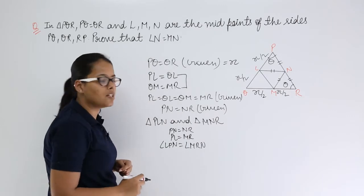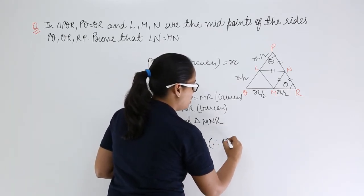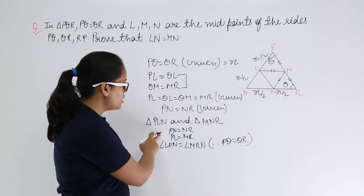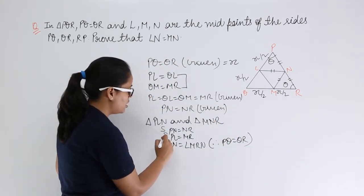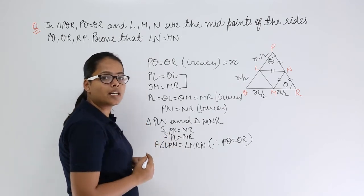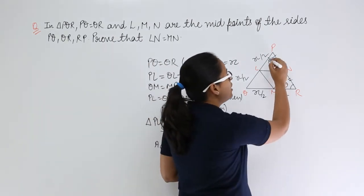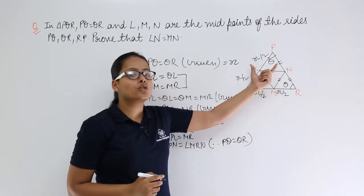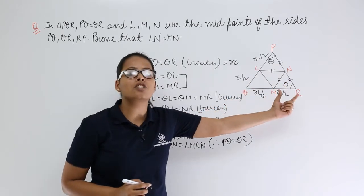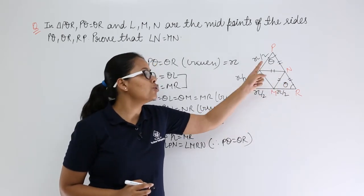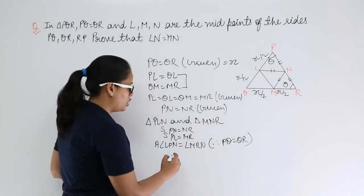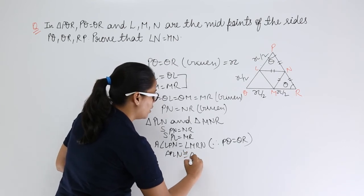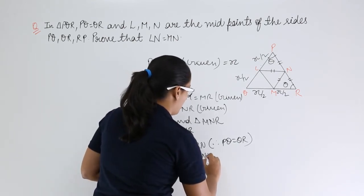Those two angles are the same because PQ equals QR, making this an isosceles triangle. Now you can see: side, side, and angle. The angle between the two sides equals the angle between the two sides of the other triangle. If the included angle between two sides equals the included angle of the other triangle, then those two triangles are congruent. So triangle PLN is congruent to triangle MNR.